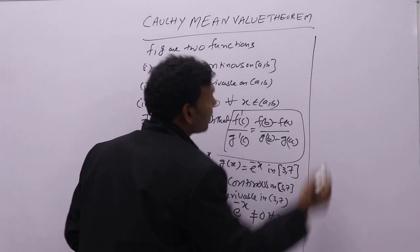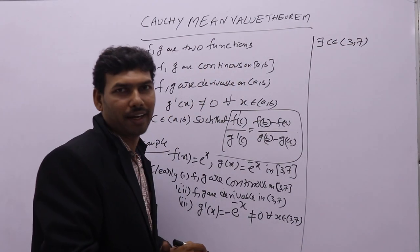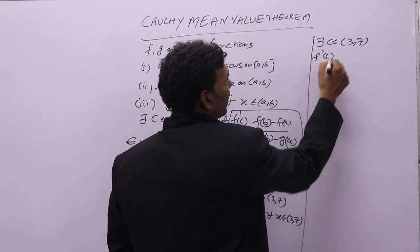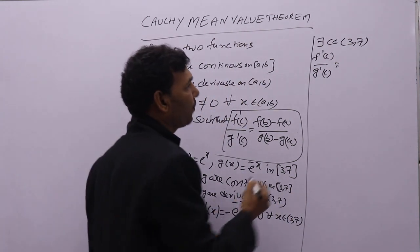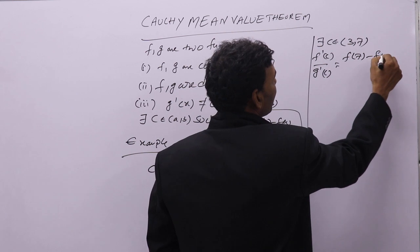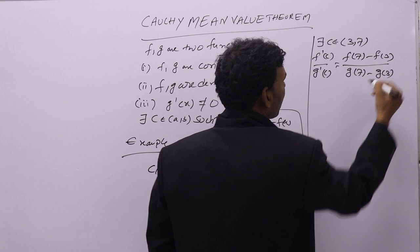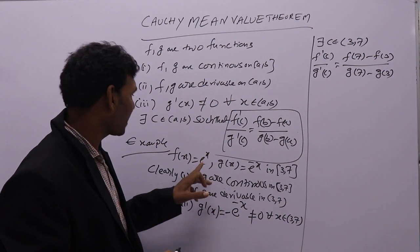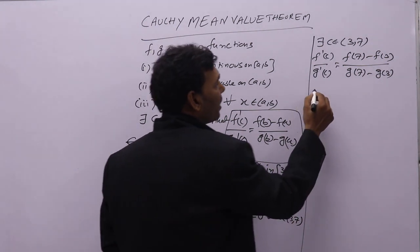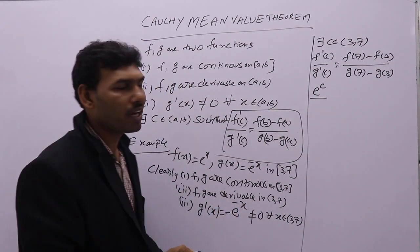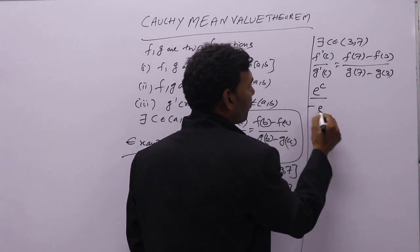Then there exists c in open interval (3, 7) such that f dash of c divided by g dash of c equals f(7) minus f(3) divided by g(7) minus g(3). The differentiation of e power x is e power x, so differentiation of e power c is e power c. Differentiation of e power minus x is minus e power minus x, so g dash of c is minus e power minus c.